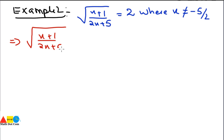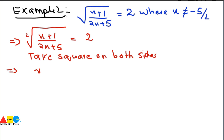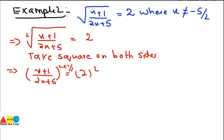To eliminate the radical, we raise each side to the power equal to the index. The index is 2, so we take the square of both sides. The square root, which is the 1/2 power, multiplied by 2 cancels out, giving us: (x + 1) / (2x + 5) = 4.